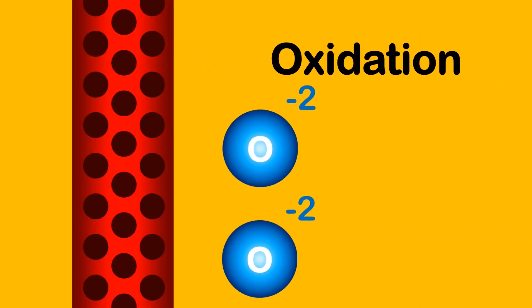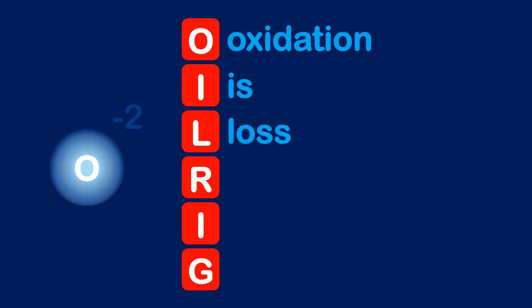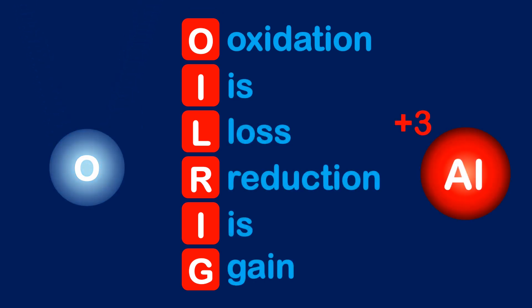And the negative non-metal ions are attracted to the positive anode where they lose electrons to become neutral non-metal atoms. This is called oxidation. And if you ever forget which one is which, use the acronym OILRIG. Oxidation is the loss of electrons and reduction is the gain of electrons.